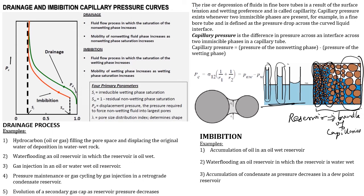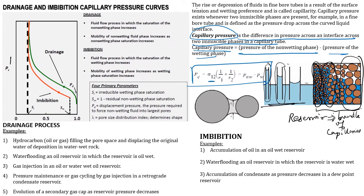Capillary pressure is the difference in pressure across an interface between two immiscible phases in a capillary tube. Capillary pressure equals the pressure of the non-wetting phase minus the pressure of the wetting phase, and can be represented as: Pc = sigma * (1/r1 + 1/r2), where sigma is the interfacial tension between the two phases, and r1 and r2 are the principal radii of curvature. The rise or depression of fluids in fine bore tubes results from surface tension and wetting preference, called capillary pressure.